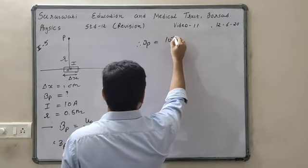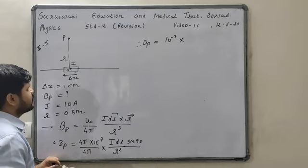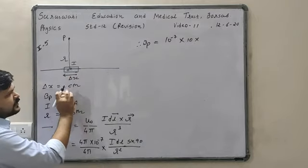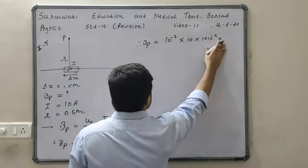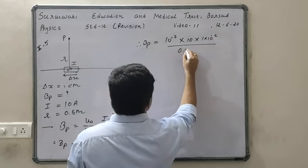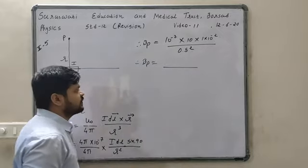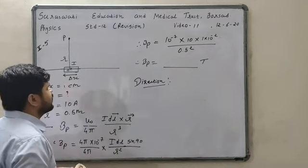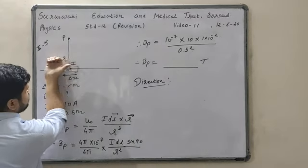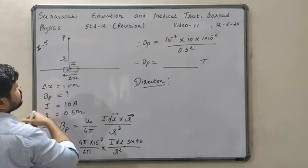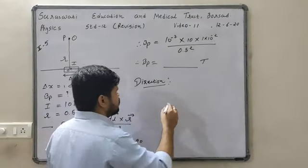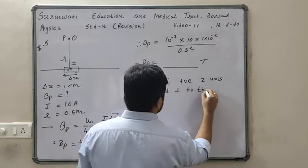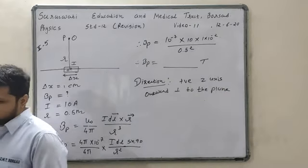Placing all values: 10 raised to minus 7 × current 10 ampere × DL = 1 centimeter = 1 × 10 raised to minus 2 × sin90 = 1, divided by R² = (0.5)². By calculation you can find out the magnetic field. For the direction, set your thumb in the direction of current; the curled fingers point outward. So at point P, the magnetic field will be in the positive z-axis direction, i.e., outward.